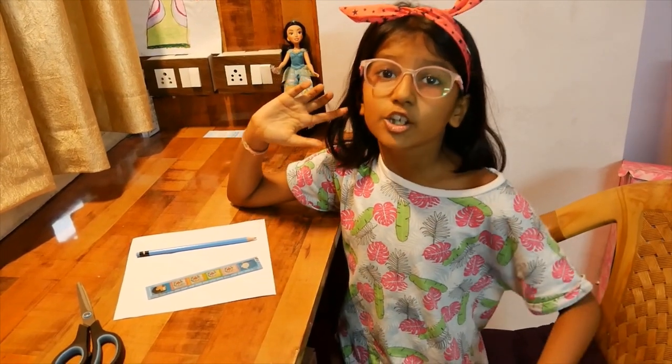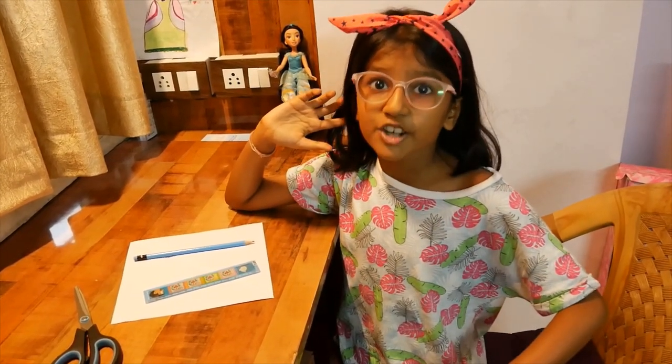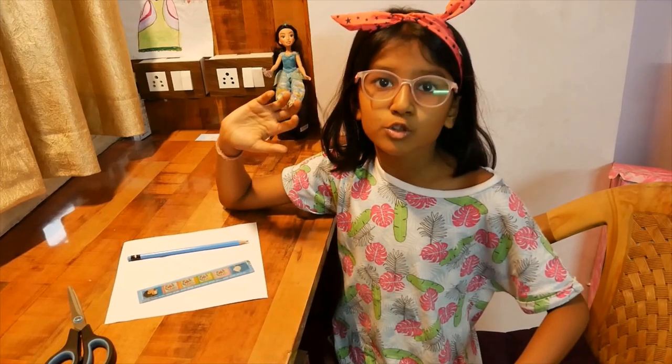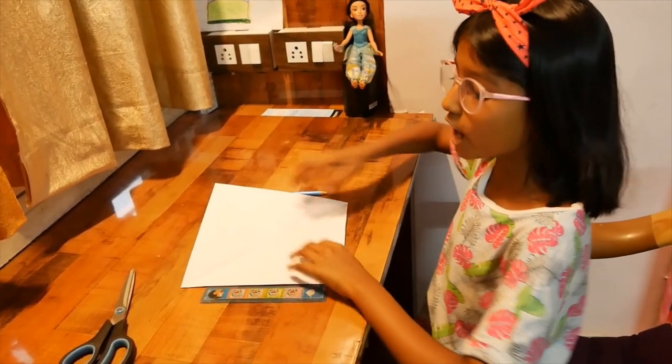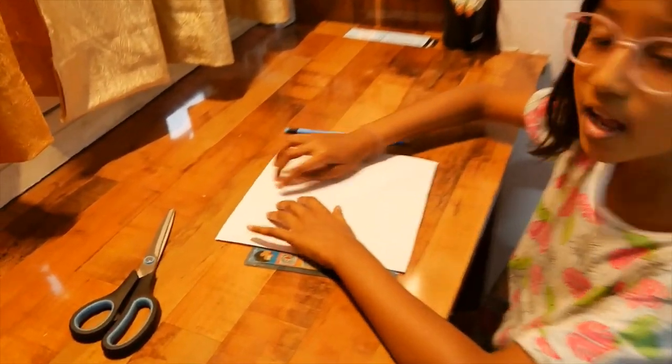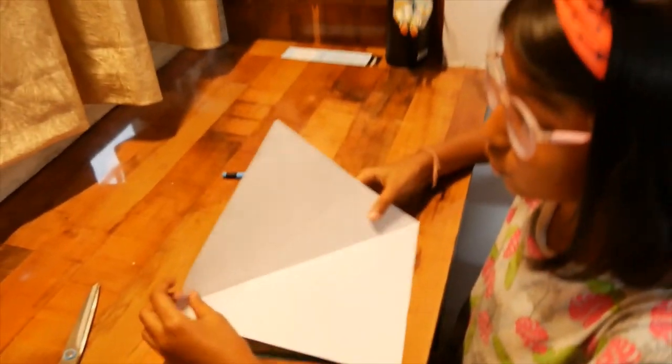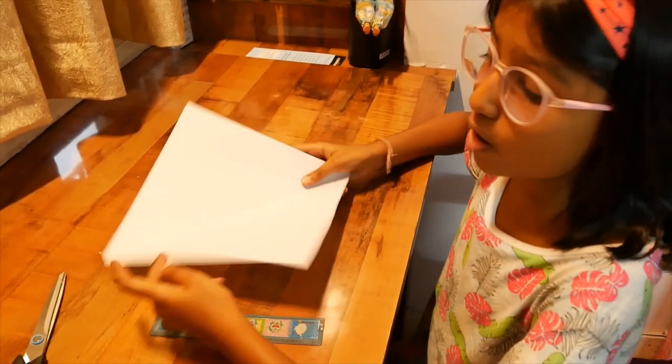And you can make different shapes from those pieces and those pieces are called tans. Now, I have a square paper and I will show you how to cut tans from it.